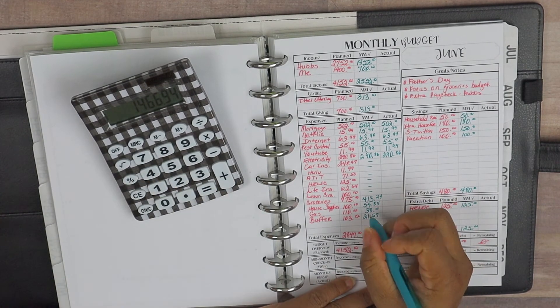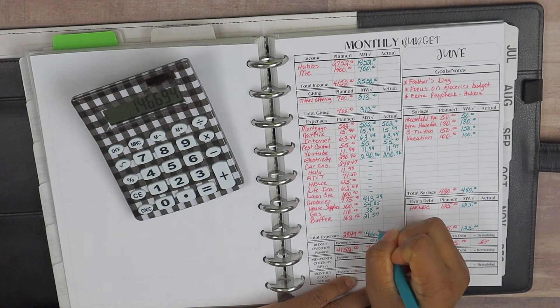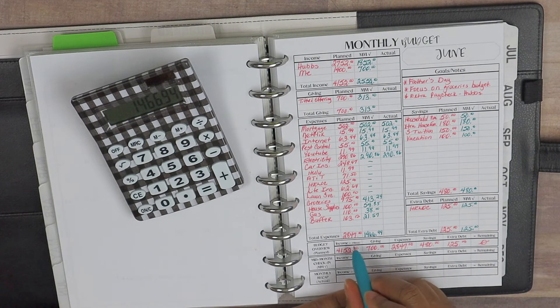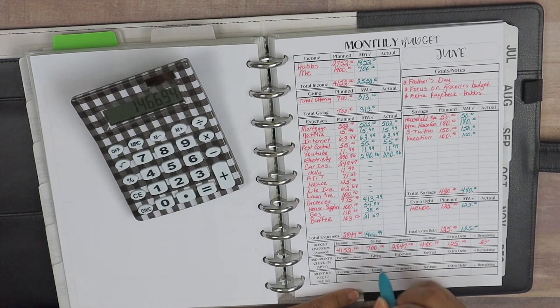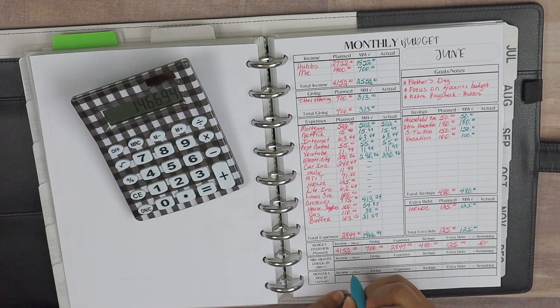All right guys, so our total expenses have come in at $1,466.94 for our mid-month check. So that is awesome—we are below our plan. So right here, this mid-month check-in section, we can go ahead and fill this in.